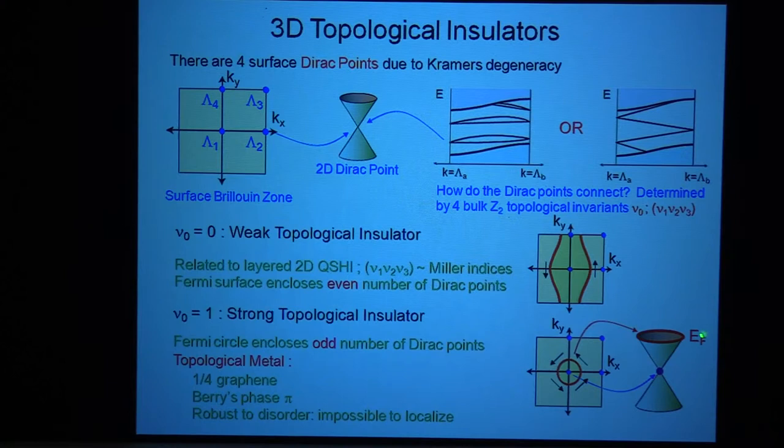No matter what. Of course, there could be three instead of one, but there can't be zero. Now, on the weak topological insulator, the Fermi surface encloses an even number of these Dirac points. And on some surfaces, that number could be zero.